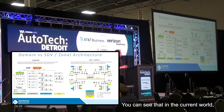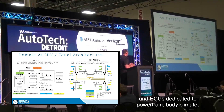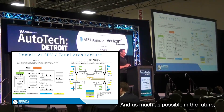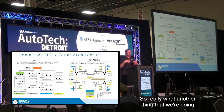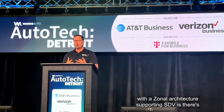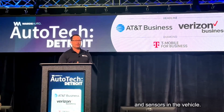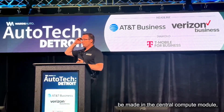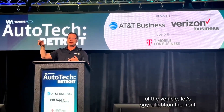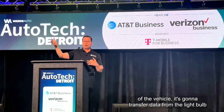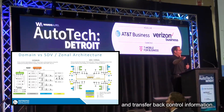This is just another view of the same thing. In the current world we have domain architectures where a network and ECU is dedicated to powertrain, body, climate, and other features. In the future we're moving towards zonal, where you have a central compute and dumb actuators and sensors on the end. There's going to be a lot more remote control of actuators and sensors — decisions are made in the central compute module, and control input and output travels across the entire network.